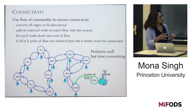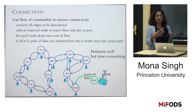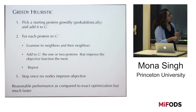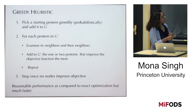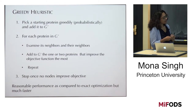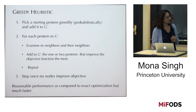This ILP approach performs well in terms of finding cancer-relevant genes, but it's time-consuming. We decided to do something much simpler and went with a greedy heuristic: pick a starting protein greedily, add it to the subnetwork, then for each protein in the subnetwork examine its neighbors and neighbors' neighbors, and add the one or two proteins that improve the objective function the most. Repeat until nothing more can be added. This has reasonable performance compared to exact optimization but is much faster.